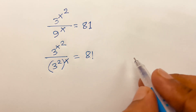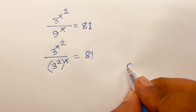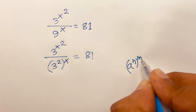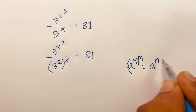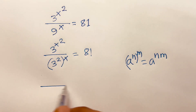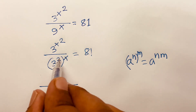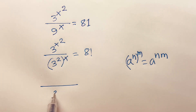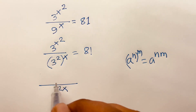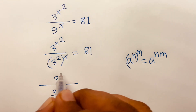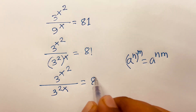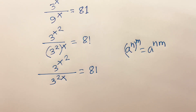Then we know that the exponential rule: a to the power n, bracket power m, is equal to a to the power n times m. According to these rules, I can say here is 3 power 2 times x, it will be 3 power 2x. And here is 3 power x squared over 3 power 2x is equal to 81.